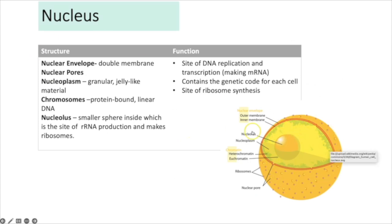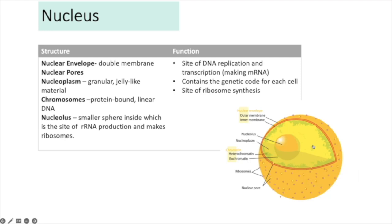The nucleus is composed of a nuclear envelope — a double membrane surrounding the nucleus — with nuclear pores that allow things like mRNA to leave. Inside is the nucleoplasm, a granular jelly-like material. Chromosomes inside are protein-bound, with DNA wrapping around histone proteins, and the DNA is described as linear. The nucleolus is a small, darker sphere inside the nucleus where RNA and ribosomes are created — it is the site of ribosome synthesis. The nucleus is also the site of DNA replication and transcription.